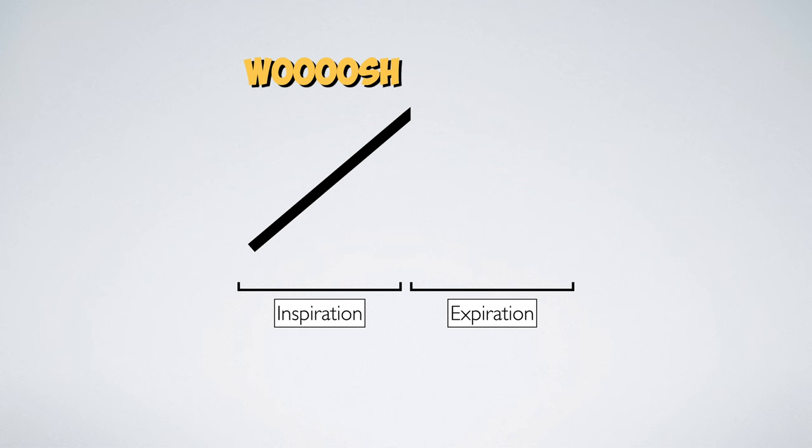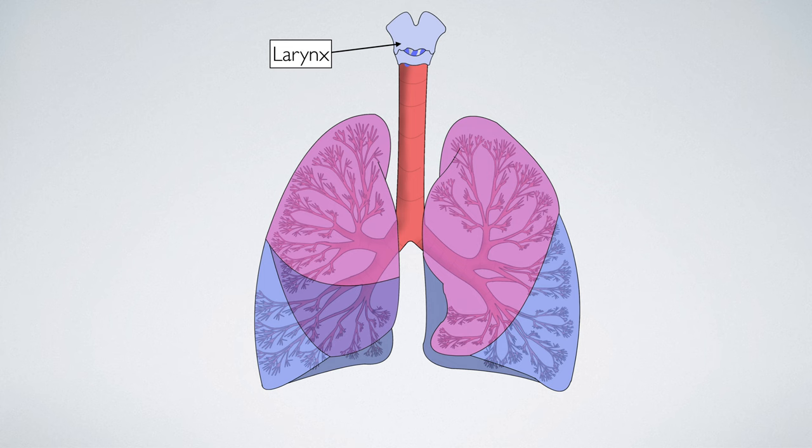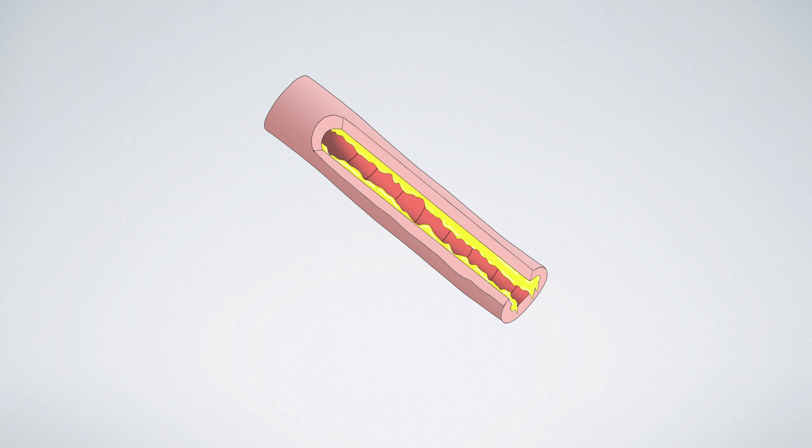Wheeze can be generated anywhere from the larynx to the distal bronchioles. It is produced by the rapid movement of air through a narrowed airway that is almost at the point of closure.